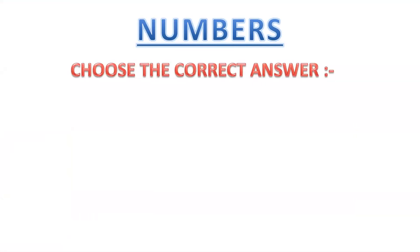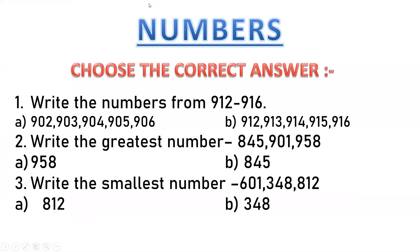Numbers. Choose the correct answer. Write the numbers from 912 to 916. You see the first one: 902, 903, 904, 905, 906. Is it starting from 902? No. It is starting from 912. So this is the answer: 912, 913, 914, 915, 916.